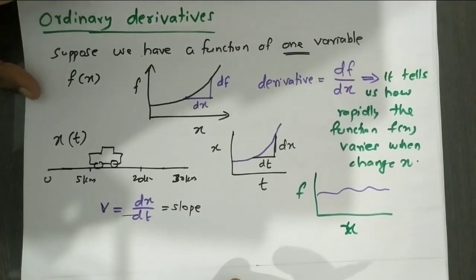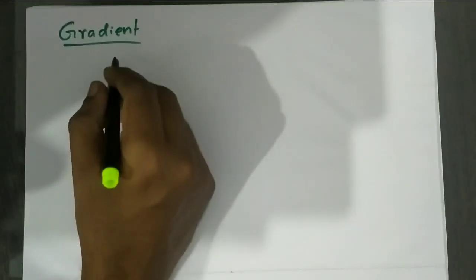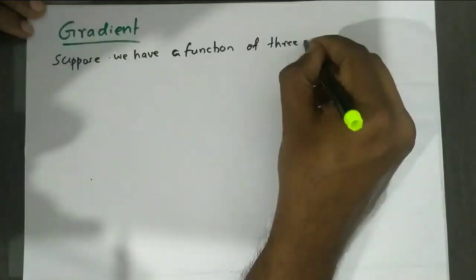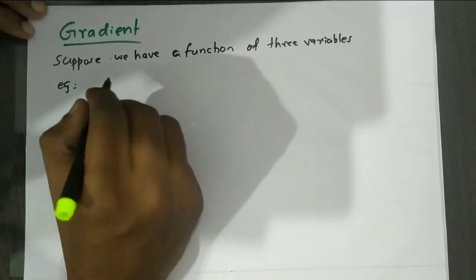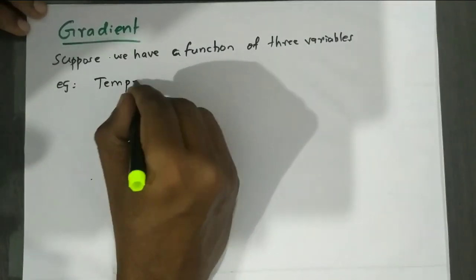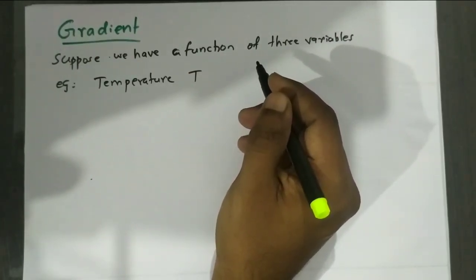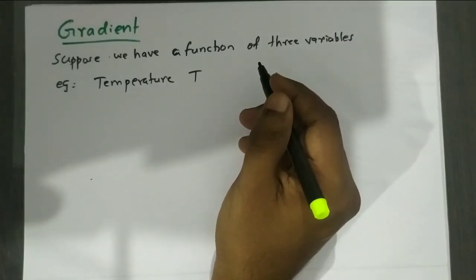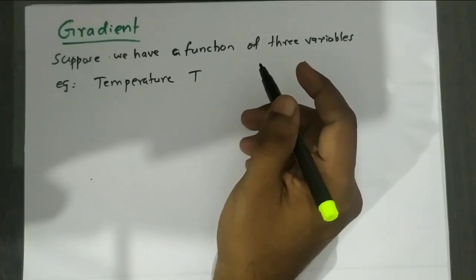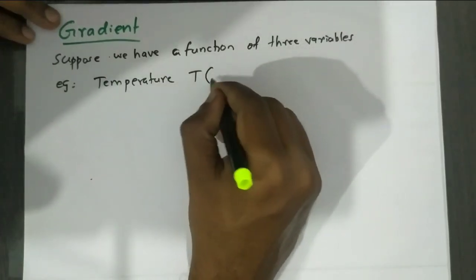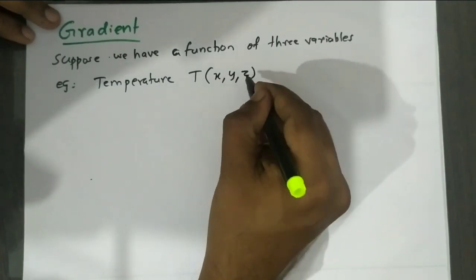Next we discuss the gradient. If a function depends upon one variable, that is a normal derivative. Suppose we have a function of three variables — for example, temperature. The temperature in the room depends on three variables: T(x, y, z).